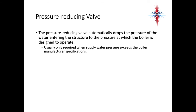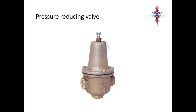The pressure-reducing valve automatically drops the pressure of incoming water to the pressure at which the boiler is designed to operate. Boilers operate between 12 and 15 psi, while building supply pressures are normally between 60 and 100 psi. The screw at the top allows you to adjust to the needed boiler pressure. Always watch the arrows — they indicate the required direction of water flow.